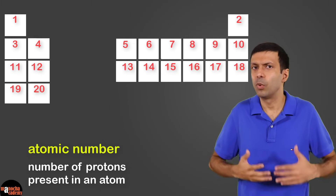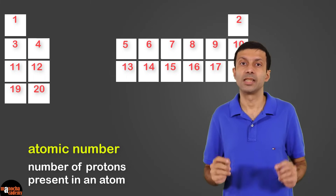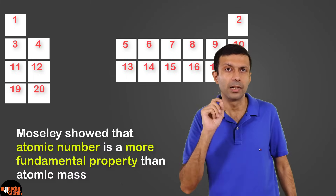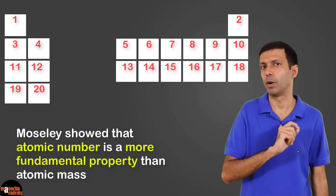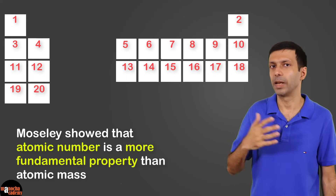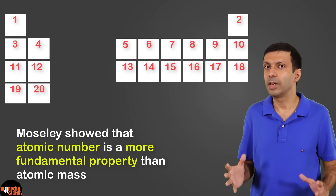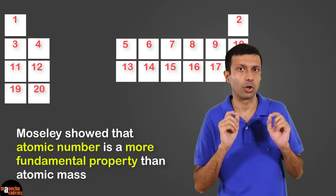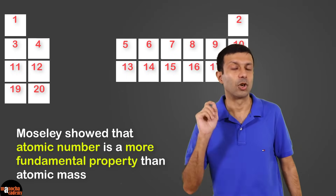Now, you may be wondering why. Because scientists proved that atomic number is a more fundamental property for elements as compared to atomic mass. The chemical properties of elements are more related to their atomic number than their atomic mass.